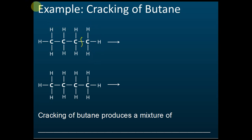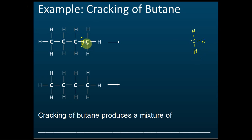Initially, each carbon-carbon bond shares one pair of electrons — two electrons shared between them. After we break the bond, one electron belongs to one carbon and the other electron belongs to the other carbon. We call this a free radical — a molecule that has one electron not shared with another atom. Free radicals can attach to other molecules or atoms easily.